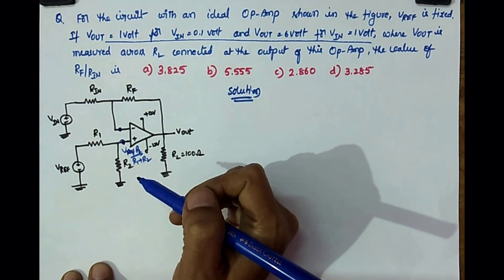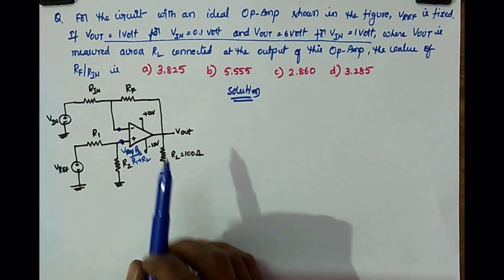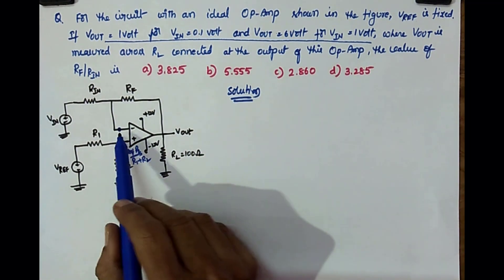Then now write the KCL here. So again write the KCL here at this inverting terminal, write the KCL, KCL at inverting terminal.